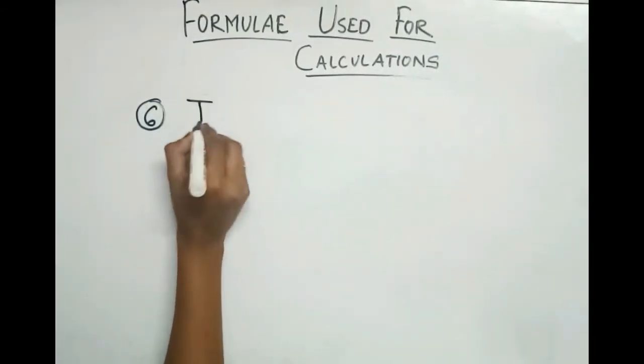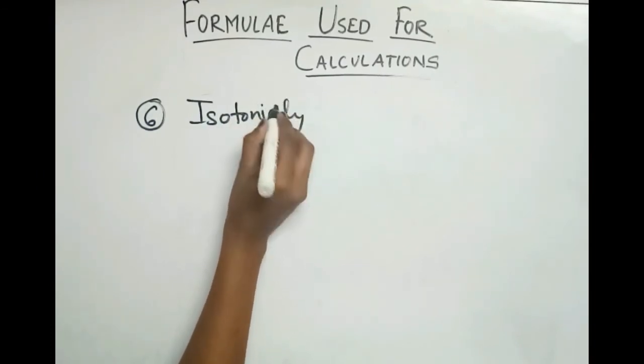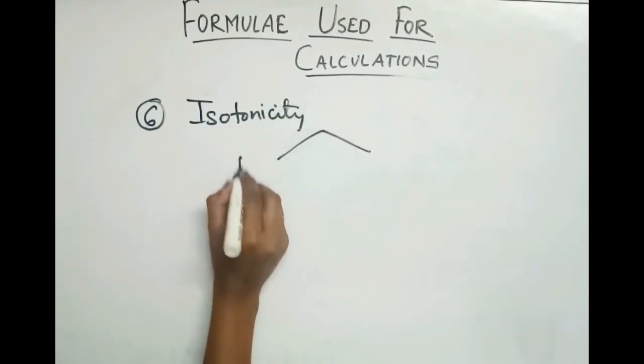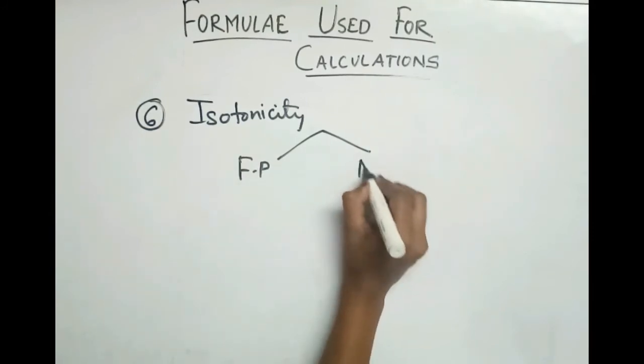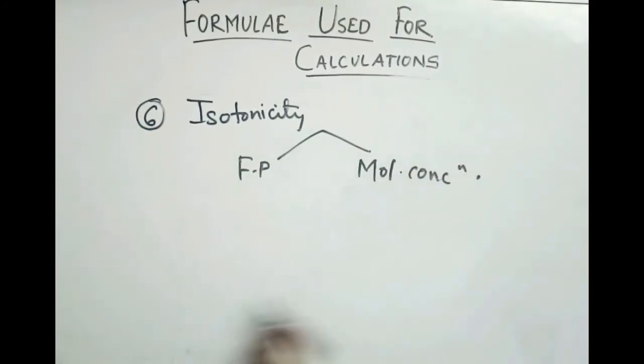The sixth formula is for calculating isotonicity. Isotonicity is calculated by two methods: freezing point and molecular concentration. First, we will see the freezing point method.